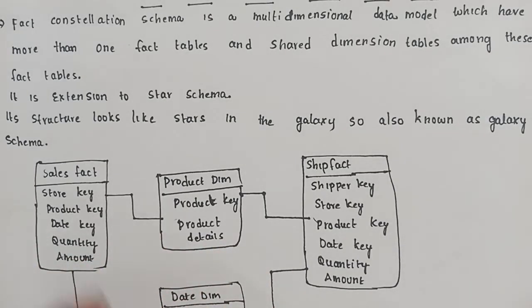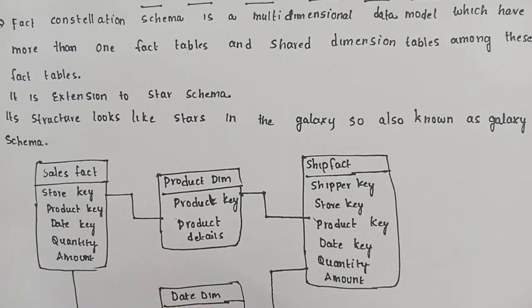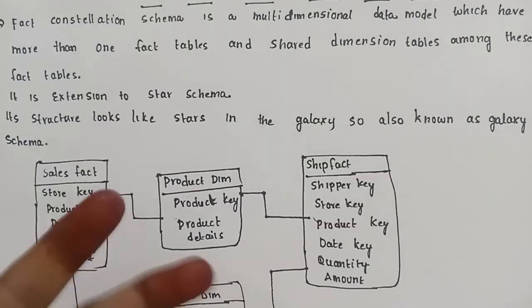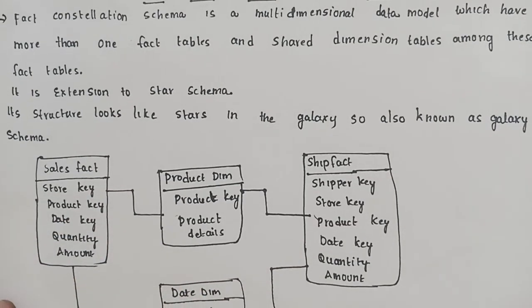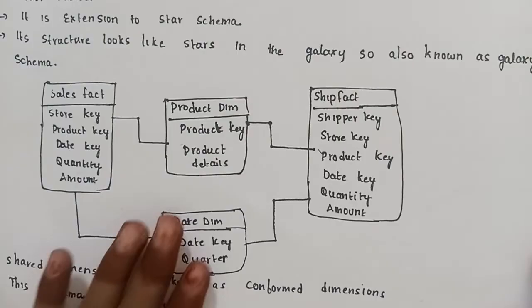This structure looks like stars in a galaxy because the fact constellation schema is formed from more than one star schema. So this is the galaxy schema example.